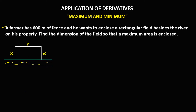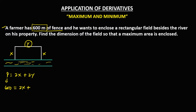Since 600 meters is the total fence, this represents the perimeter. The perimeter of a rectangle is two lengths plus two widths. Since we're using x and y, that's 2x plus 2y. However, since one side is the river, we don't need fence there, so the perimeter equation becomes 2x plus y equals 600.